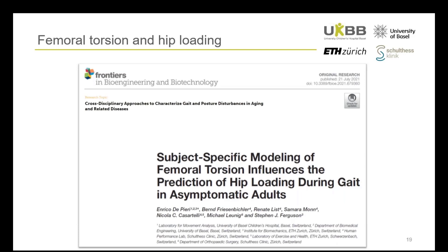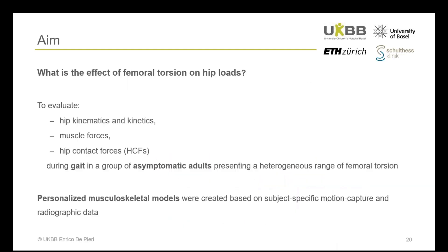First I would like to show you why it is important to account for femoral torsion in the analysis of joint loads. I will present the results of a study carried out as a collaboration between ETH Zurich and the Schulthess Clinic. Our focus was specifically on the hip — we wanted to evaluate hip kinematics and kinetics, muscle forces, and hip contact forces occurring during gait in a group of asymptomatic adults that presented a heterogeneous range of femoral torsion.